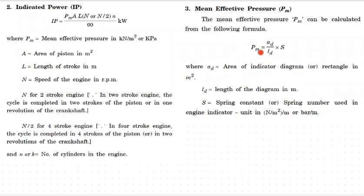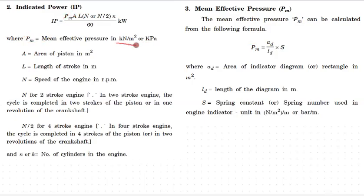This formula can be used to find the indicator power. In the indicator power equation, the unit of PM is kilonewtons per meter square. Once we have the unit of indicator power, we work through the unit analysis.